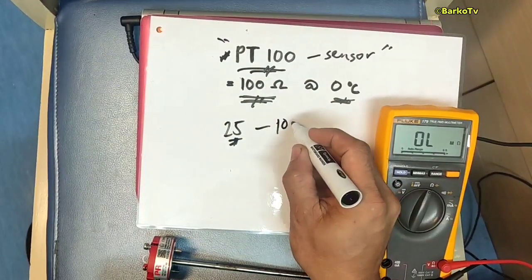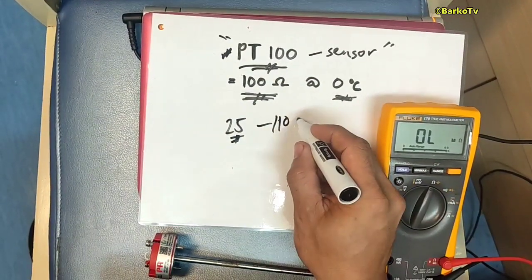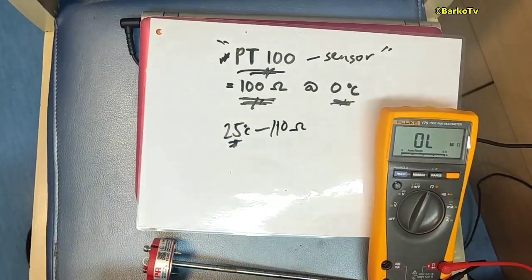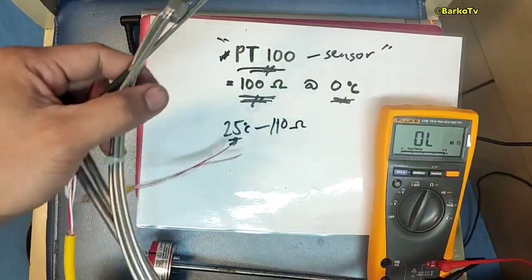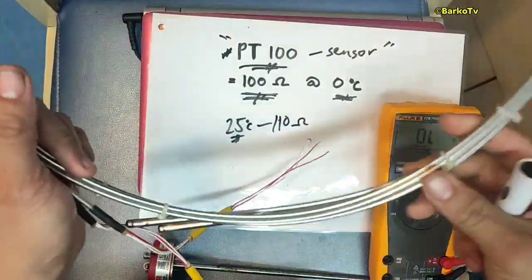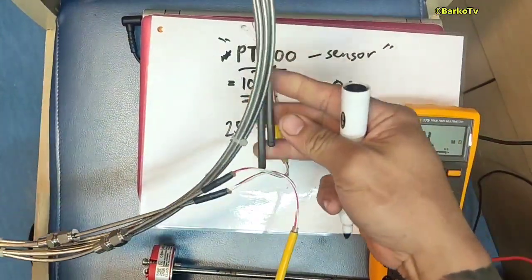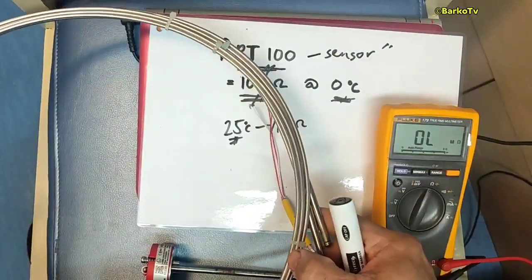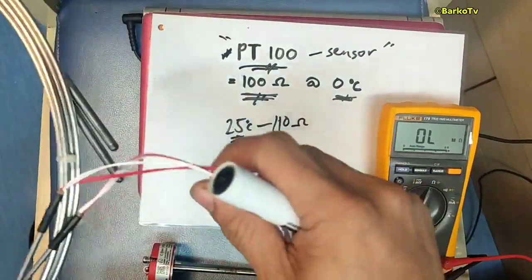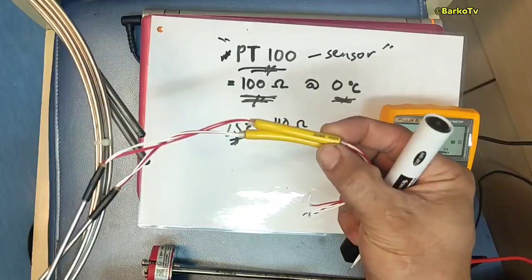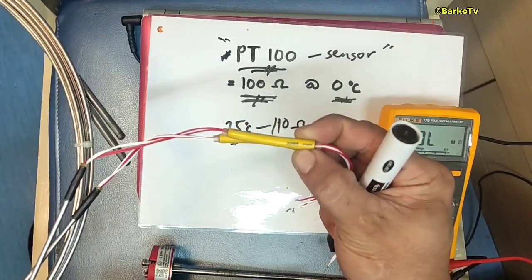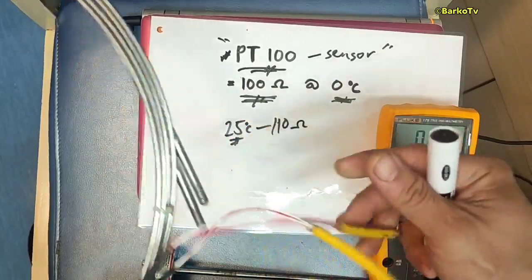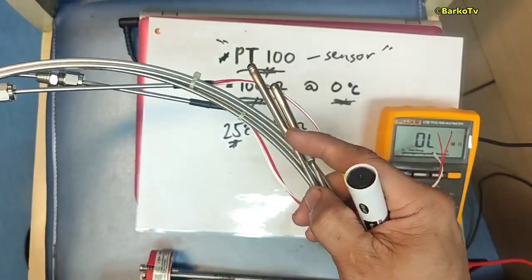Right now our temperature is almost 25°C. In the PT100 table, that corresponds to around 109.6 to 110 ohms. This other sensor here is also a PT100, used on our cargo tanks — it's 3000 mm to 3095 mm in length. This part here is the sensing bulb.